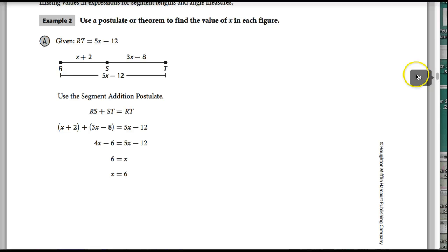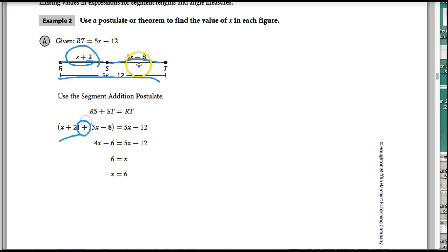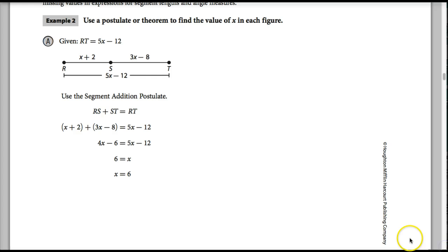So now, let's take a look at this. RT is equal to 5x minus 12. You have to use the segment addition postulate. So we all know that if you go this line and add that one together, you're going to get the whole thing, right? So there you go. x plus 2 plus 3x minus 8. And that's going to equal what? The whole thing, which is 5x minus 12. And that was really all you had to do. And then now, once you set it up, you have to actually calculate, right? And so, what are you going to do?